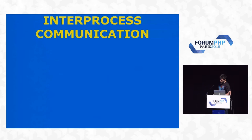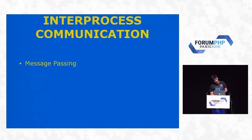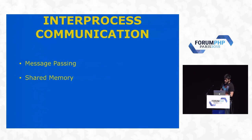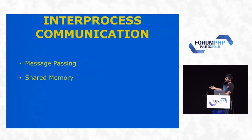Inter-process communication — this is more familiar. It is either message passing or shared memory: you either share memory where the other process reads stuff, or you send messages.